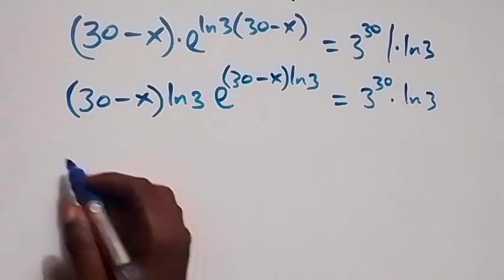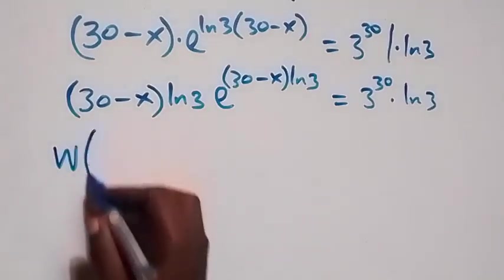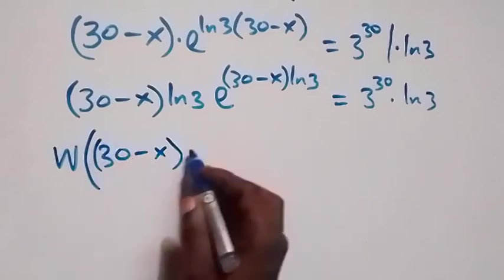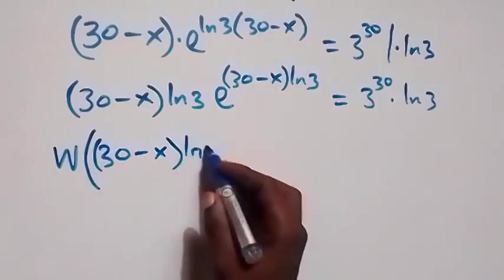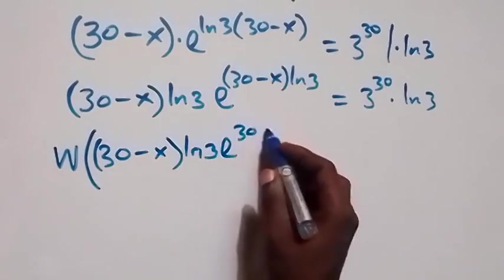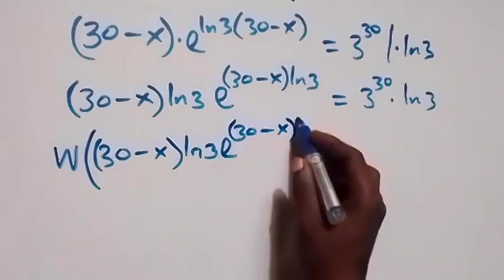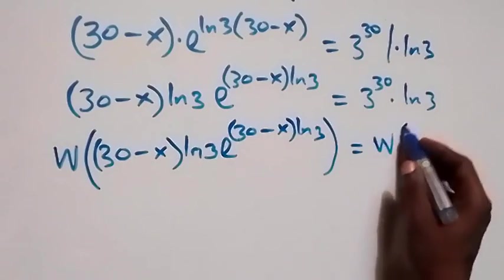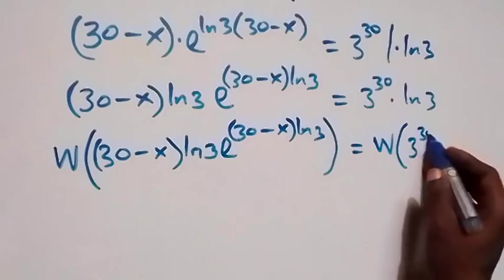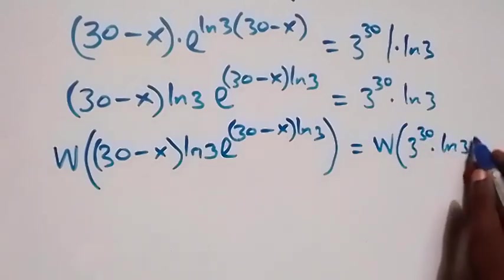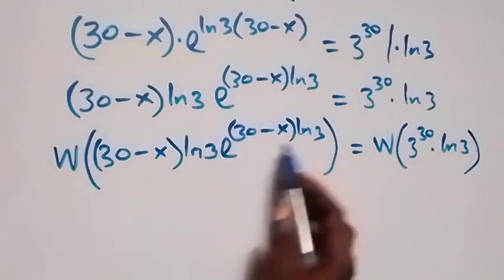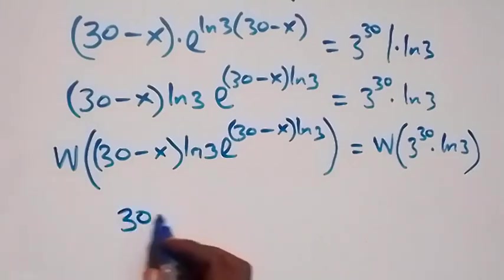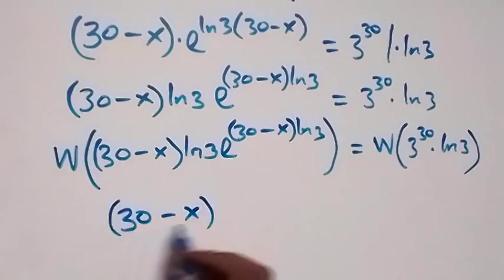Now we can apply the W function on both sides. We have W of (30 minus x)·ln 3 times e^((30−x)·ln 3). Since the power and the coefficient are the same, this simply becomes 30 minus x times ln 3, which equals W of 3 raised to power 30 times ln 3.